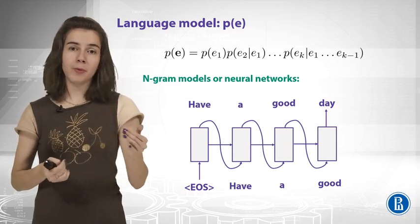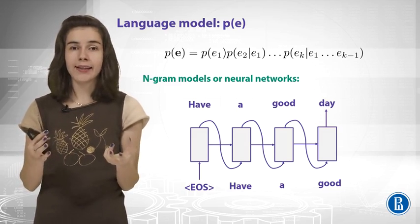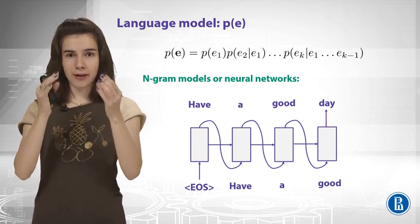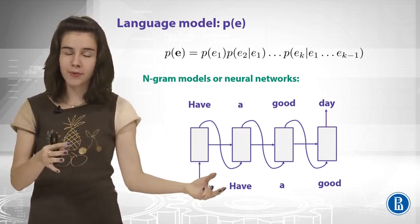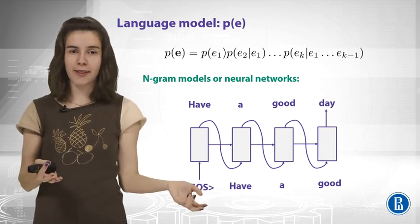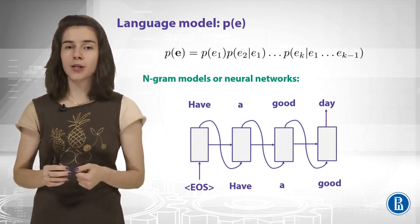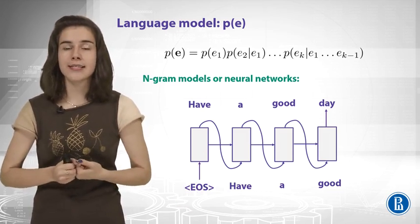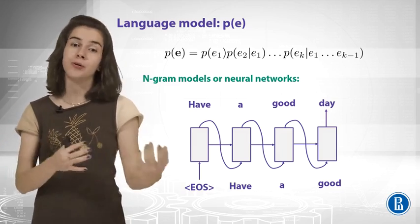So, we need to compute the probability of a sentence of words. We apply chain rule and then we know that we can factorize it into the probabilities of the next word given some previous history. You can use Markov assumption and then end up with n-gram language models, or you can use some neural language models such as LSTM to produce the next word given your previous words.